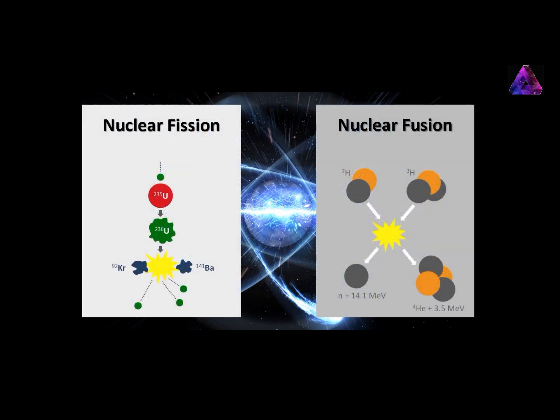In fission, energy is gained by splitting apart heavy atoms — for example uranium — into smaller atoms such as iodine, cesium, strontium, xenon, and barium. On the contrary, fusion is combining light atoms, for example two hydrogen isotopes, deuterium and tritium, to form a heavier helium.